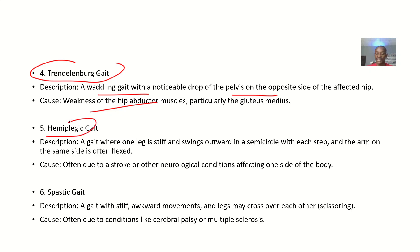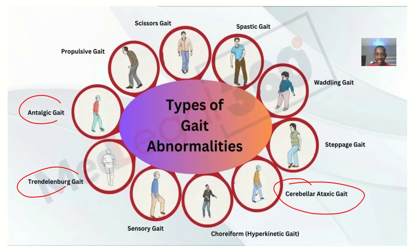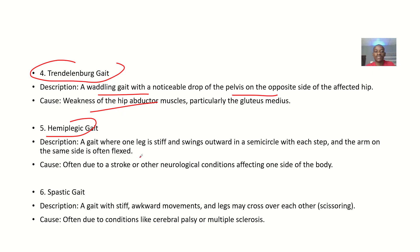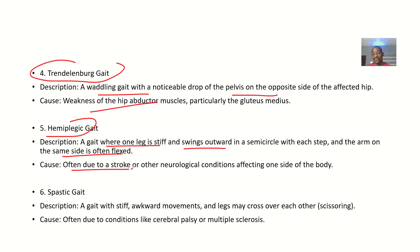Hemiplegic gait — it's a gait where the leg is stiff and swings outward in a semicircle with each step, and the arm on the same side is often flexed. The cause of hemiplegic gait is often things like stroke or neurological conditions affecting one side of the body.